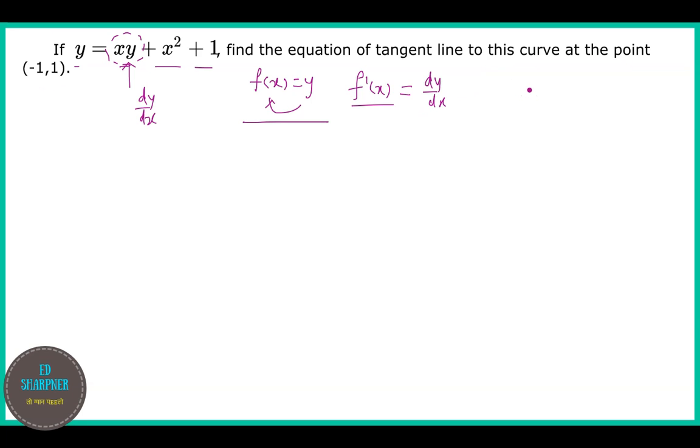So basically, tangent has a slope and slope is given by dy/dx value. The actual value would be found by putting x = -1 and y = 1. Once we get the slope, we can model the equation by the following particular expression...